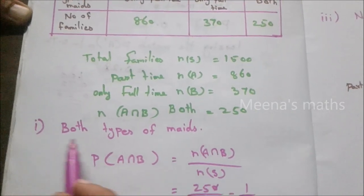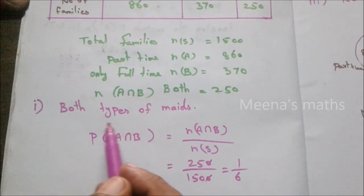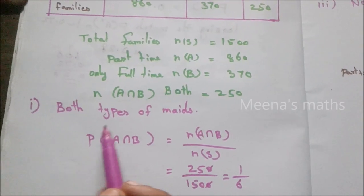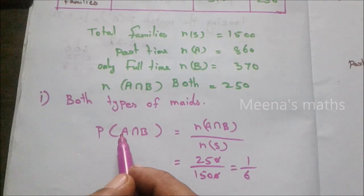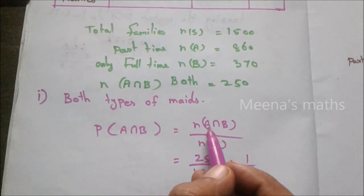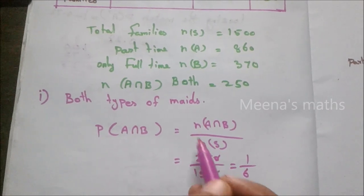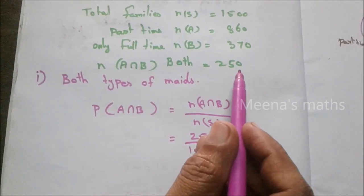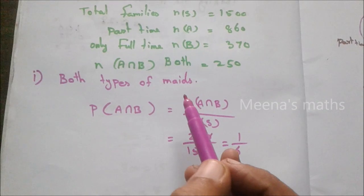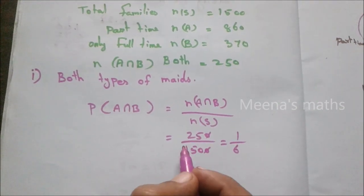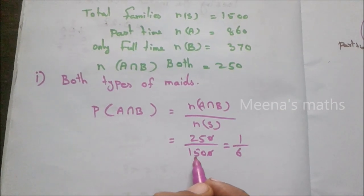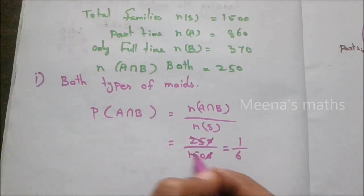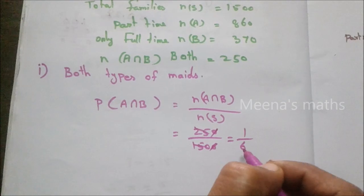Question 1: Find the probability of families having both types of helpers. Probability of A intersection B equals N of A intersection B by N of S. N of A intersection B equals 250. So probability equals 250 by 1500, which simplifies to 1 by 6.